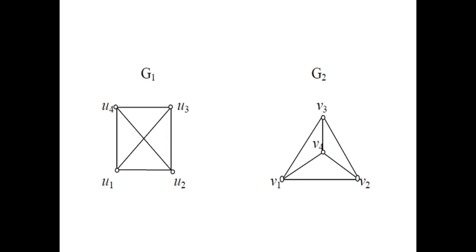Now we can see whether these two graphs are isomorphic. For that, you can check the degree of the points. You can see here the degree of u1 is 3, degree of u2 is 3, u3 is 3, and u4 also the degree is 3. Let's check G2: the degree of v1 is 3, v3 is 3, v4 is 3, and v2 is 3.